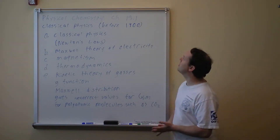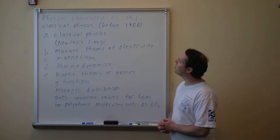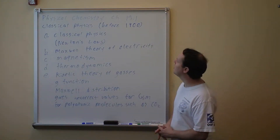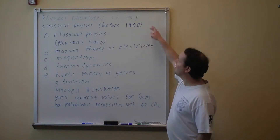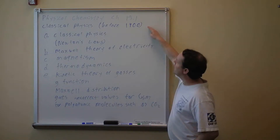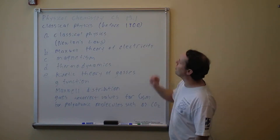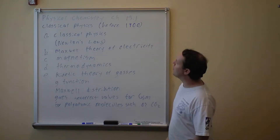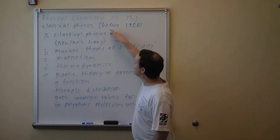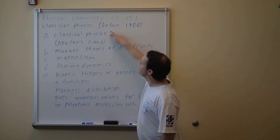This is Physical Chemistry, Chapter 8, Section 1. We're just about to begin quantum mechanics. To refresh your memory, classical mechanics is what they had before 1900, roughly speaking, around the near century.